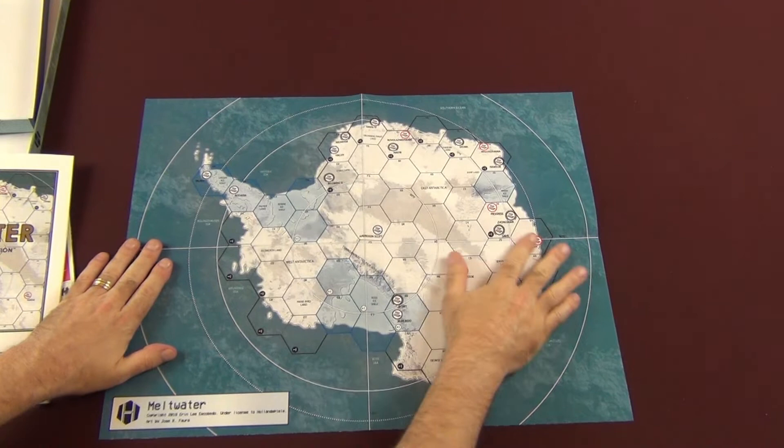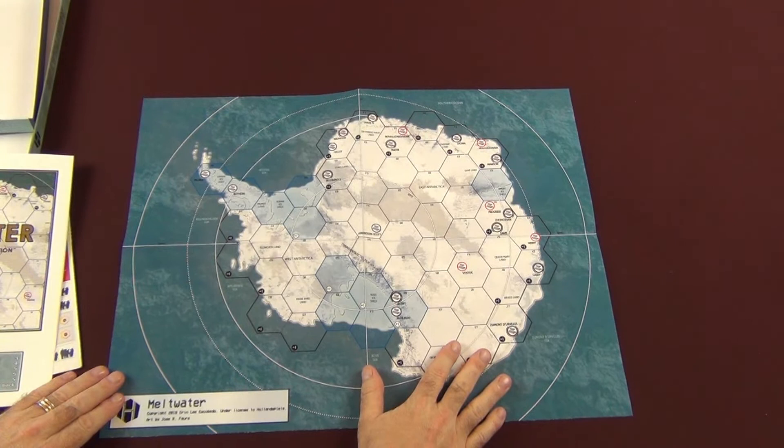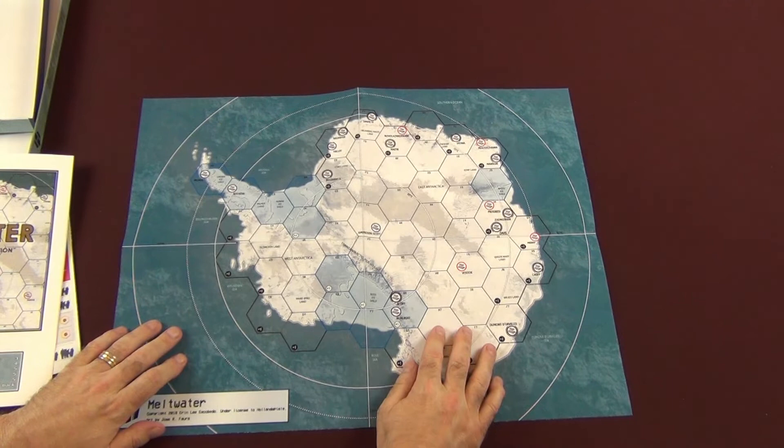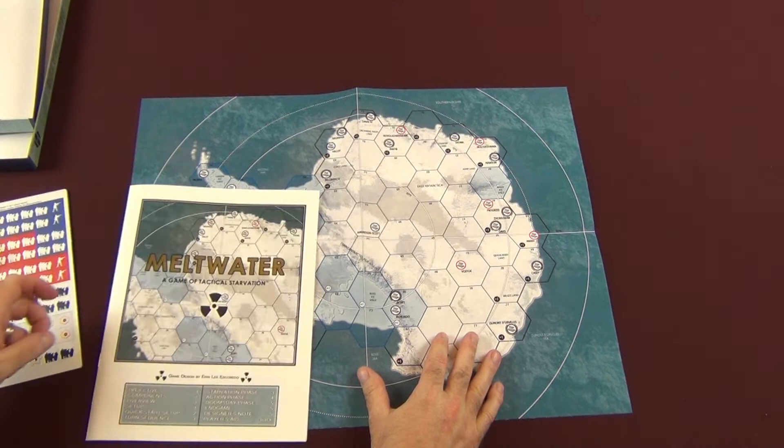I really like this color scheme on this map. This is just a really nice map. I love the color tone on it. You have different areas of Antarctica. This is it. This is where everybody's going to be.